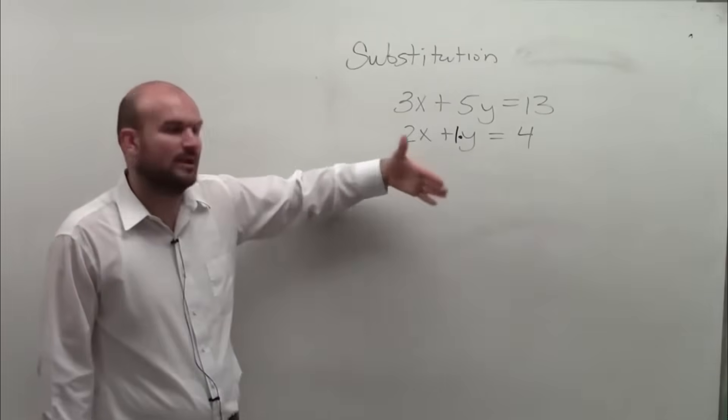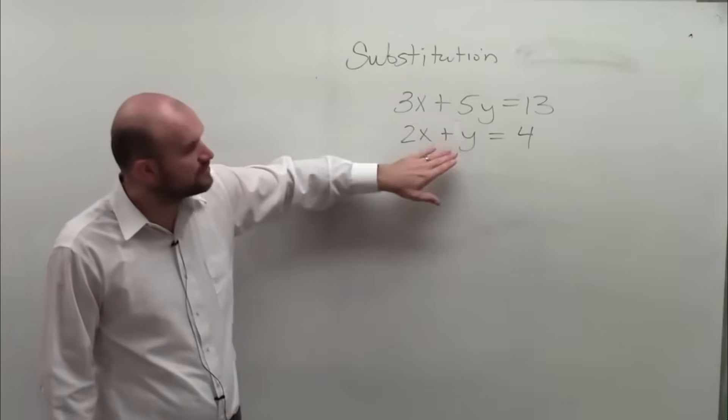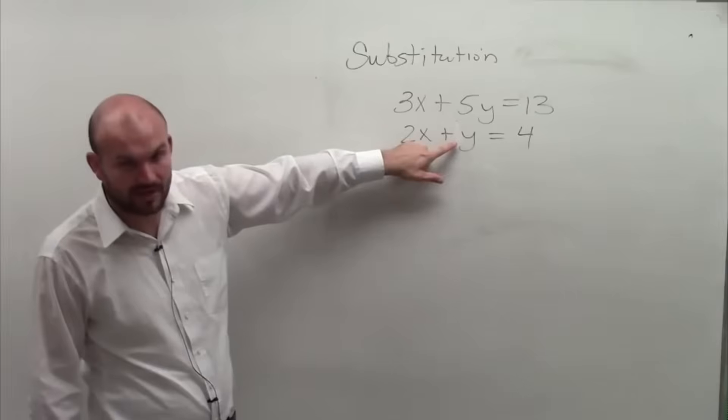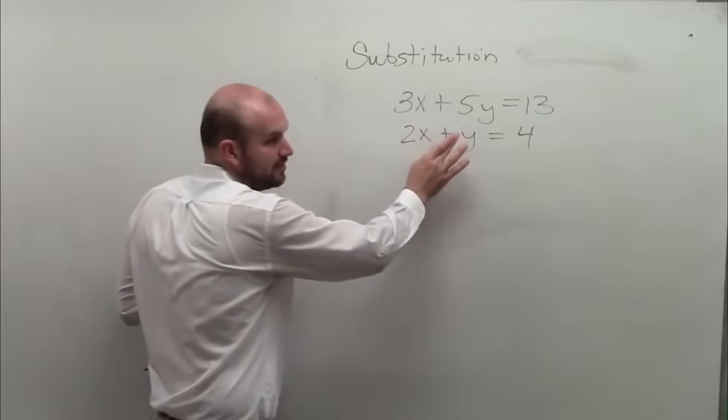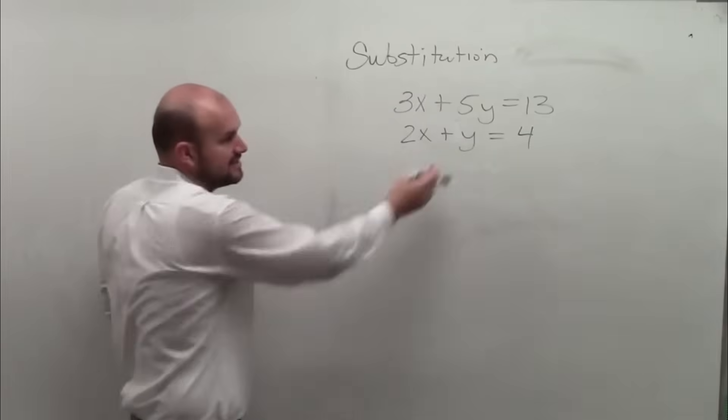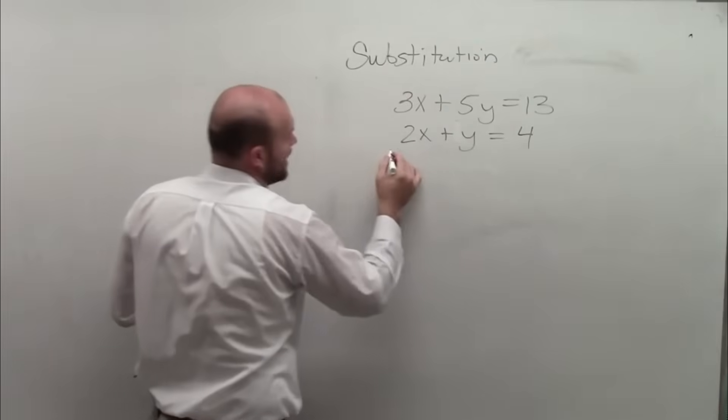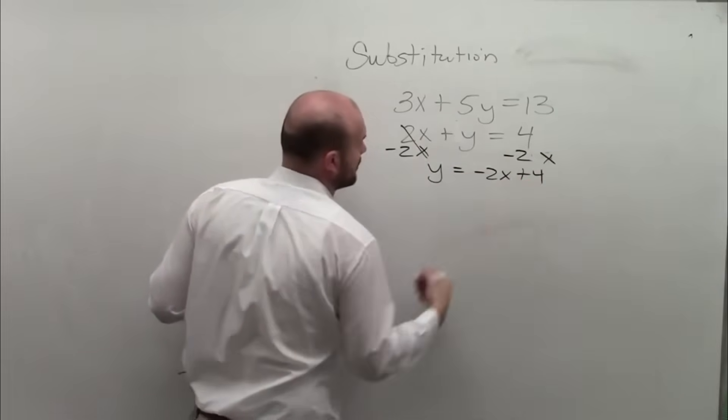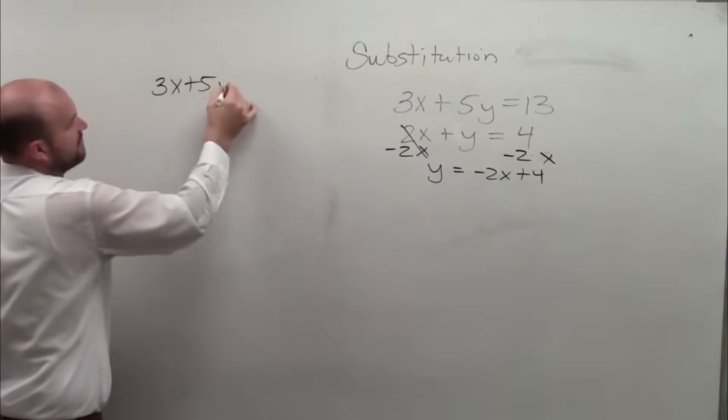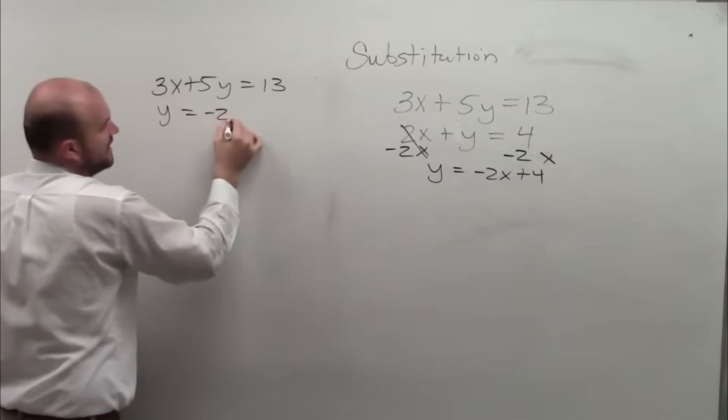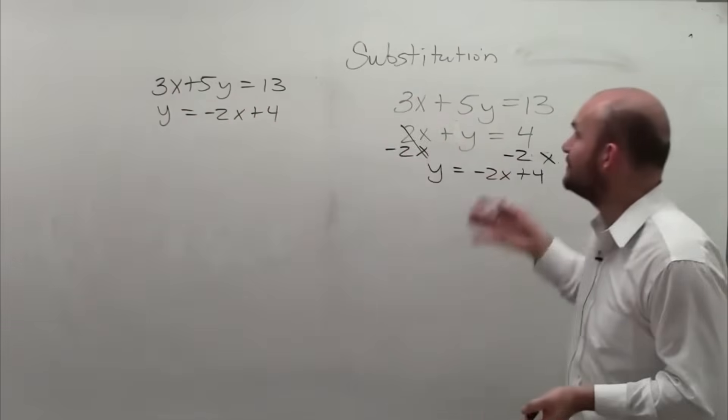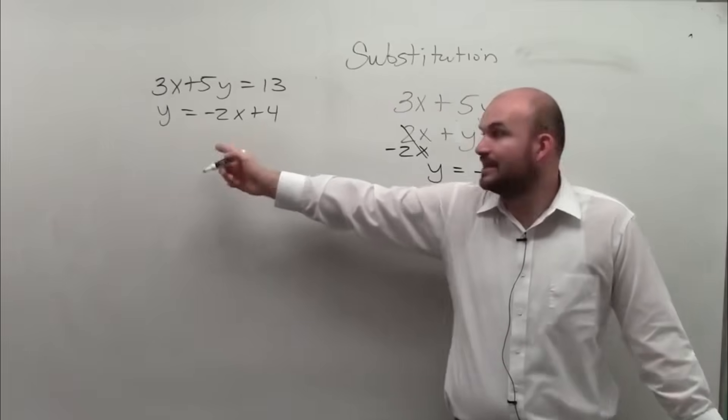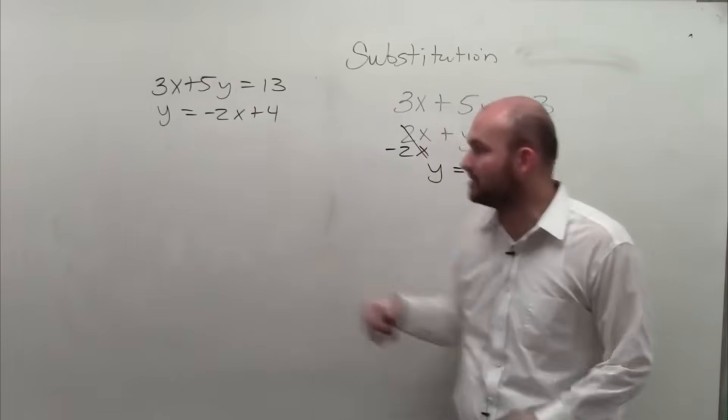So how do we use substitution, and why is it important when we have a coefficient of 1? The reason is because whatever variable has a coefficient of 1 or negative 1, and even if you have two of them, just pick which one you want to solve for. But this is the only variable that has a coefficient of 1. So what I'm going to do is I'm going to solve for that variable. Because when it has a coefficient of 1, I don't need to undo multiplication or division. I just need to undo addition or subtraction. So I'm going to subtract 2x from both sides. Therefore, now I have y equals negative 2x plus 4. So now I'm just going to rewrite my system: 3x plus 5y equals 13, and y equals negative 2x plus 4.